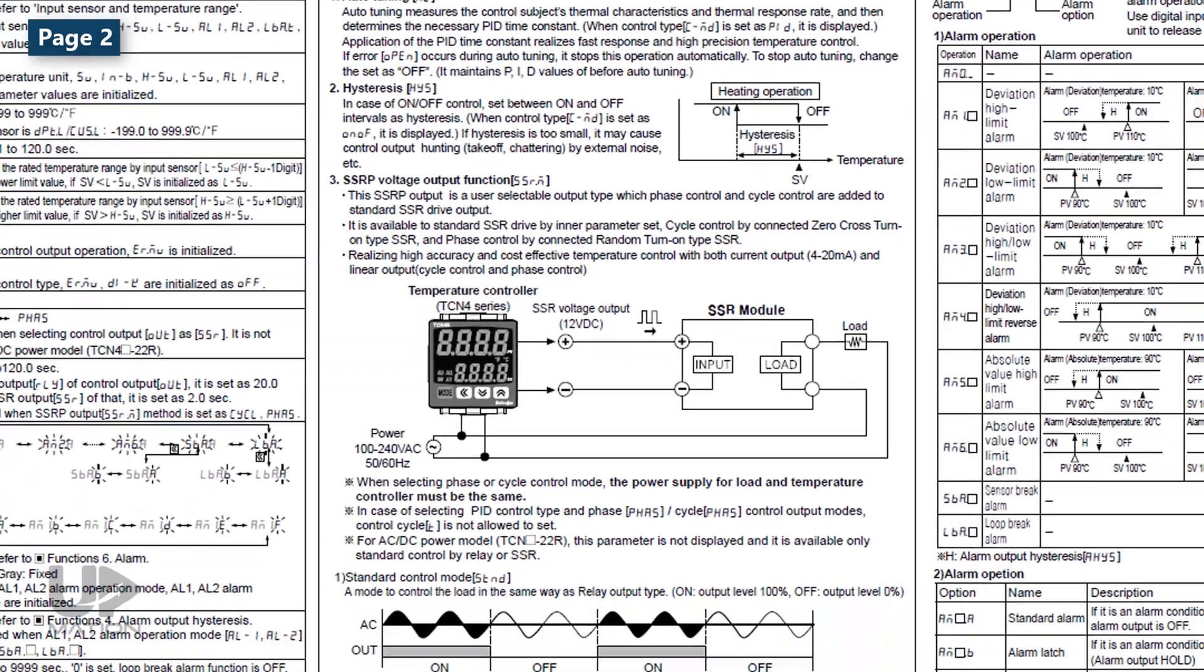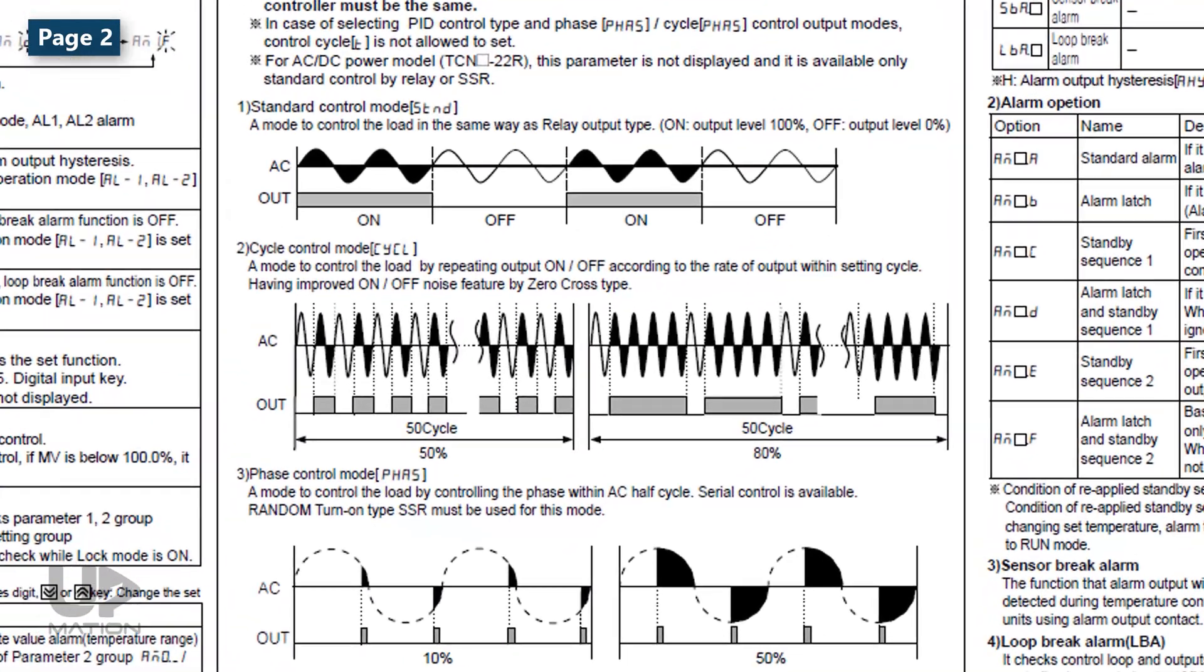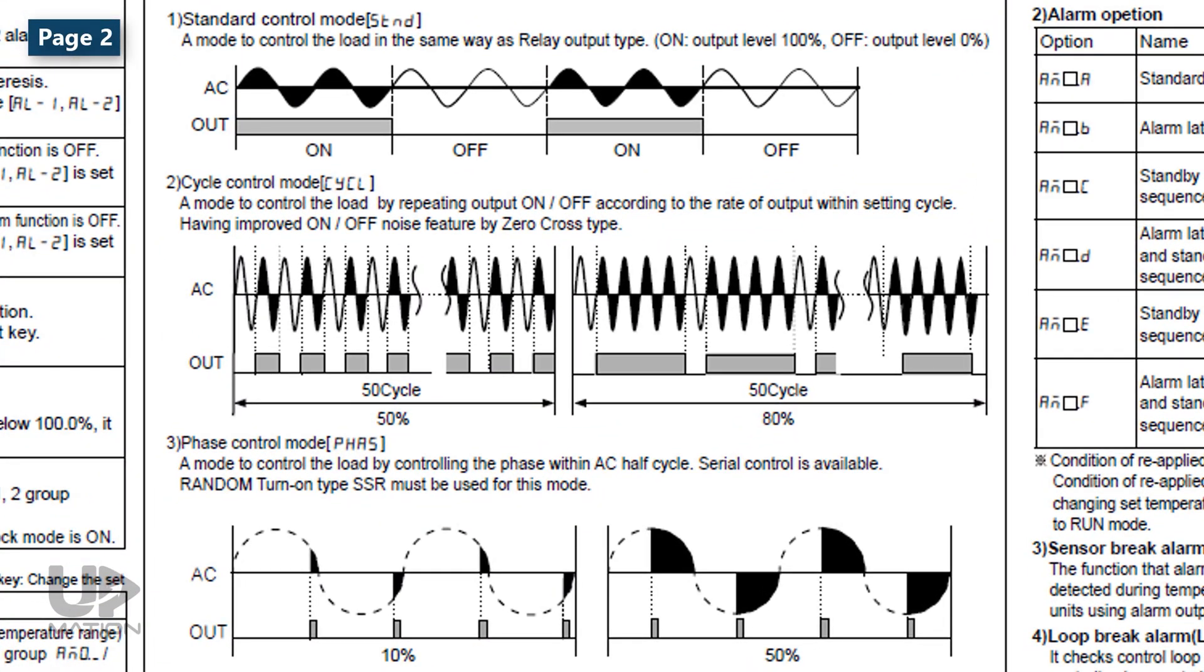But this function has also been classified into three other categories depending on the type of SSR module we have. Remember that there is not a single SSR that fits all. Here, we have a zero-cross type SSR module and therefore, we should select the cycle mode of the SSR function. We had elaborated extensively on the SSR and its different types in a previous video.